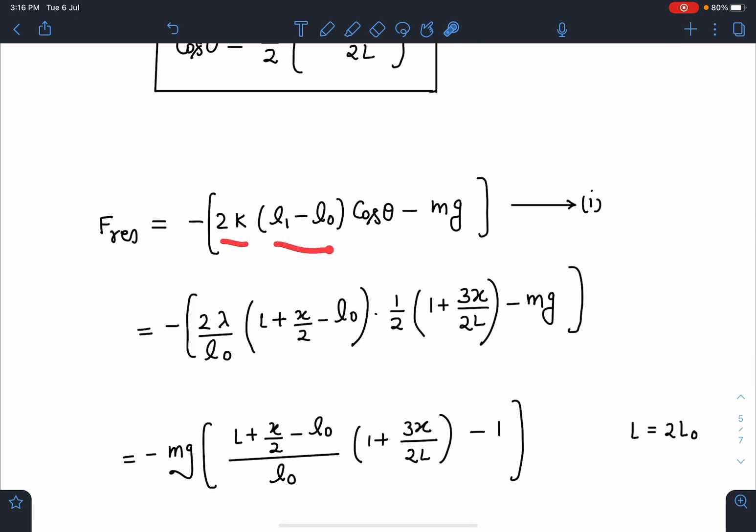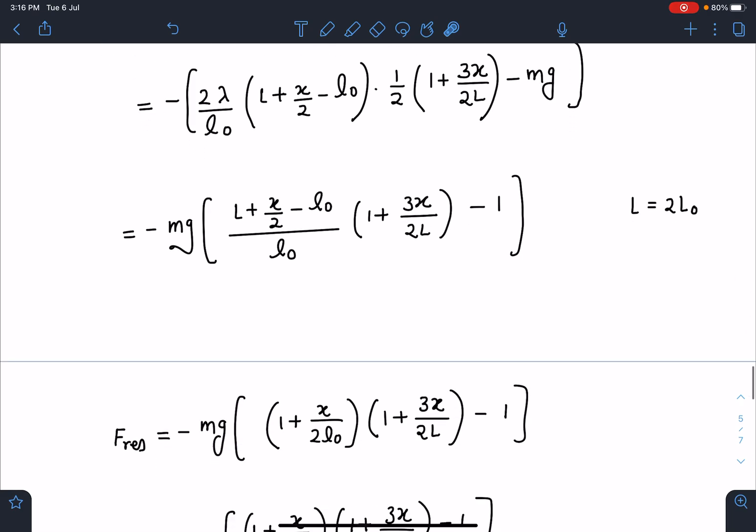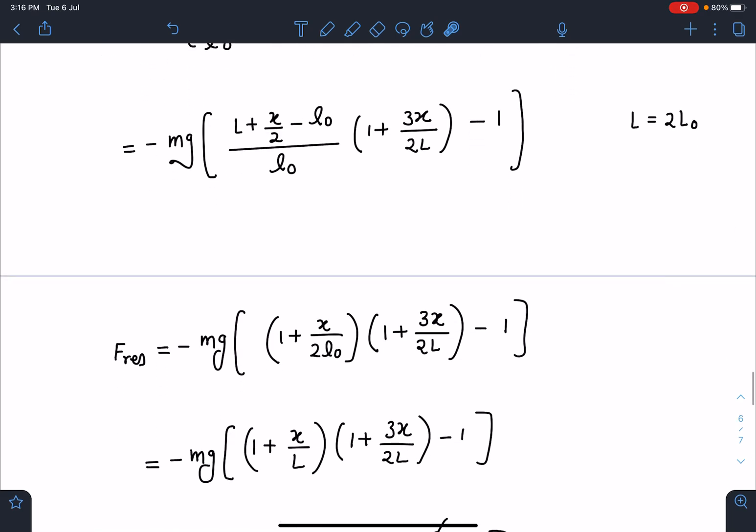Once I get the value of cos θ and length L₁, I'm going to substitute this value in F restoring expression, so 2k(L₁ - L₀)cos θ - mg. What I am going to do is k becomes λ/L₀ where λ is mg, so I can directly write mg/L₀, and mg if you take common. L₁ is L + x/2, L was the equilibrium length of the string, please remember this, and L₀ is the natural length of the string. So when I substitute these values I'm getting in this form and we have derived L was actually double of natural length.